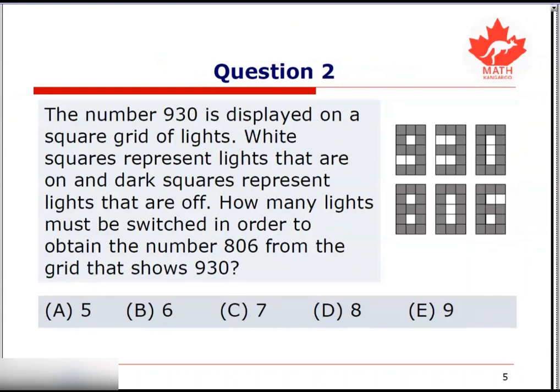Here's our second example. The number 9, 3, 0 is displayed on a square grid of lights. White squares represent lights that are on and dark squares represent lights that are off. How many lights must be switched in order to obtain the number 8, 0, 6 from the grid that shows 9, 3, 0? So we want to change this number 9, 3, 0 into 8, 0, 6 by switching on or off some of the lights on the display.